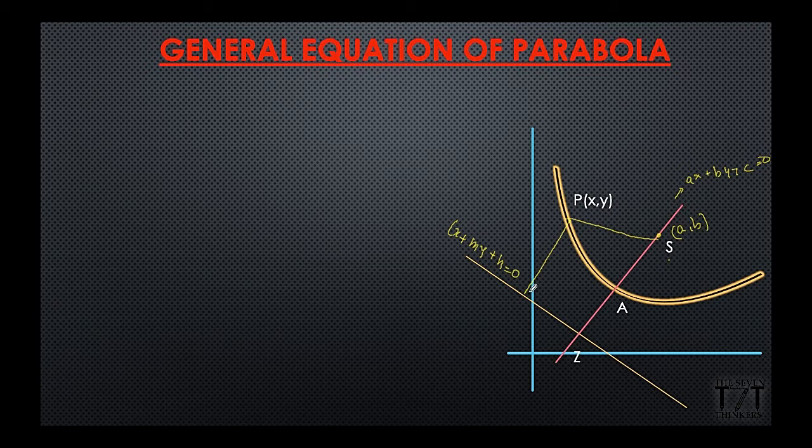So if p is any point on the parabola of the form x comma y, then what will be sp or sp square? Using the distance formula it will be this. Now what will be pm square?